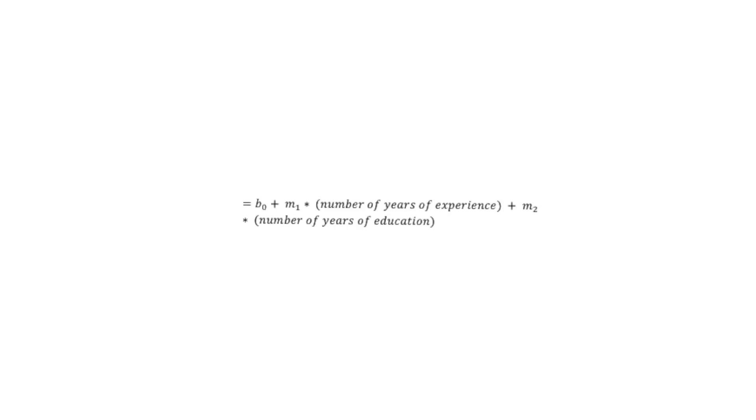Let's go back to our salary example. Let's assume that now we need to add another parameter such as years of education as a new independent variable. Since salary is now a function of two parameters — number of years of experience and number of years of education — the equation becomes: salary = b₀ + m₁ times the number of years of experience + m₂ times the number of years of education. Our objective is to obtain the values of m₁, m₂, and b₀.